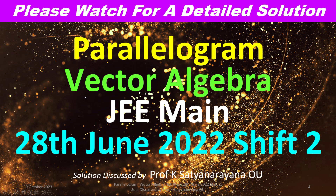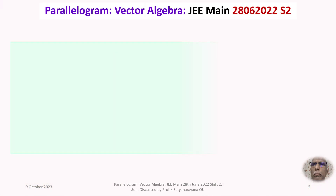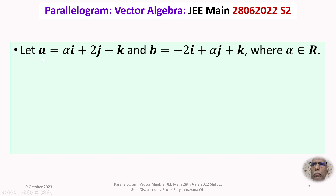We now discuss the solution of a problem from the section Vector Algebra. This question appeared in the Joint Entrance Examination Main held on 28th June 2022 in the second shift. The given question is related to the area of a parallelogram. Let vector a equal alpha i plus 2j minus k, and vector b equal minus 2i plus alpha j plus k, where alpha is a real number.